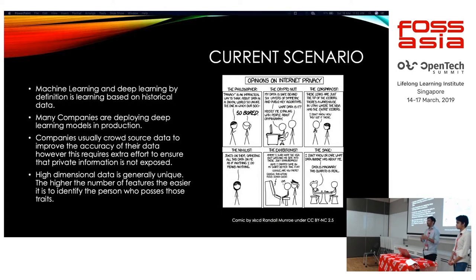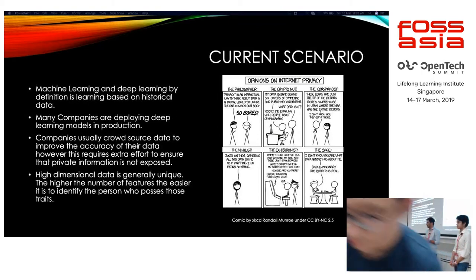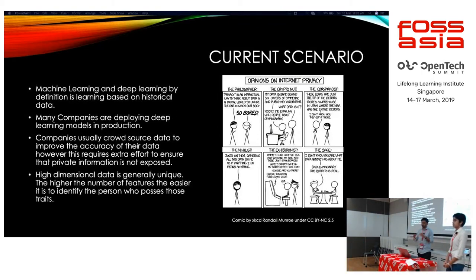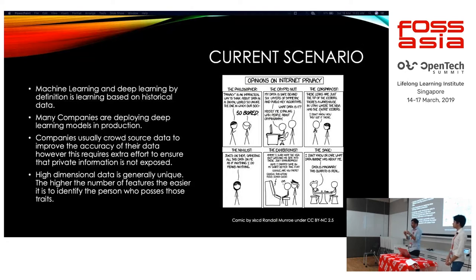More and more companies are deploying ML and DL models, and there are a lot of models coming into production. A lot of the data being used is crowdsourced, and even after basic attempts to de-identify personal details of people, it is still present. High-dimensional data with a lot of features is actually quite unique — the higher the number of features, the easier it is to identify the person whose data it is.